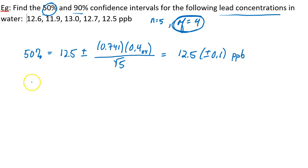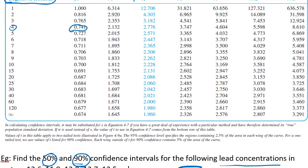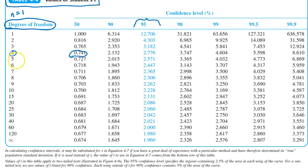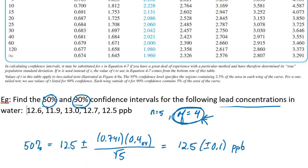So we can do something similar for the 90% confidence interval. Again, that'll be 12.5 plus or minus, and now we've got to find the value of T at 4 degrees of freedom and 90% confidence. Let's go look at our table. Here it is, 4 degrees of freedom, 90% confidence. That's 2.132.